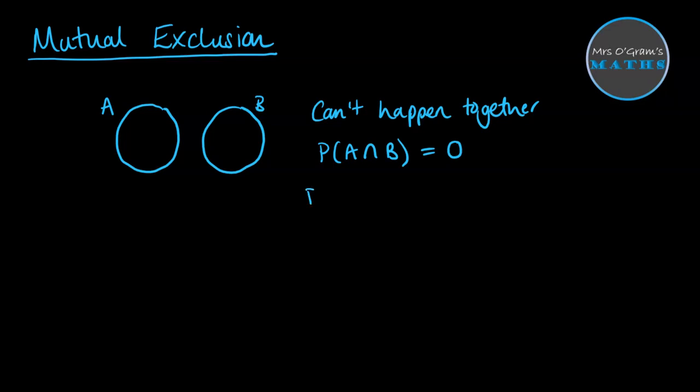We also know that if we want to work out the probability of A or B in this situation, it would simply be the probability of A plus the probability of B because there is no overlap. Whereas previously, if we had an overlap and added the two together, we would have to subtract the intersection because that overlap got double counted. But with mutual exclusion, A and B simply add up to being A or B.